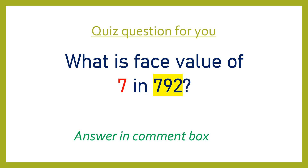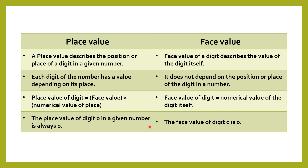Let's compare place value and face value. There is a table to compare both. Place value describes the position or place of a digit in a given number — whether it is present at the tens position, hundreds position. Place value is affected by the position. Each digit of the number has a value depending on its place. We can find the place value by multiplying the face value, that is the digit itself, with the positional value.